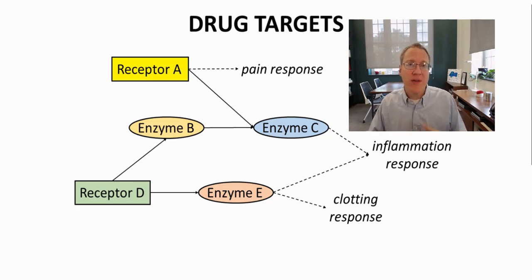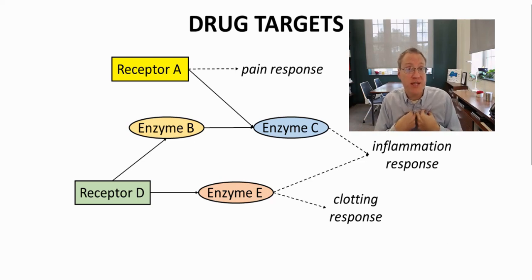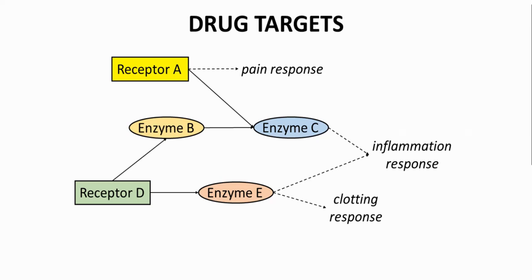On the screen, we have a hypothetical set of enzymes and receptors — potential drug targets — that are associated with different responses. The one we're interested in is inflammation. As we look at this pathway, we have five different potential targets on the screen, shown in rectangles and ovals. One of these proteins will be our drug target.